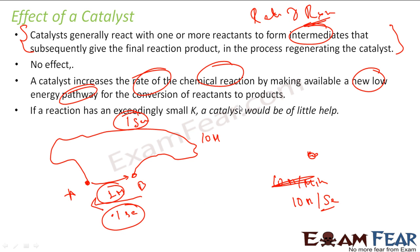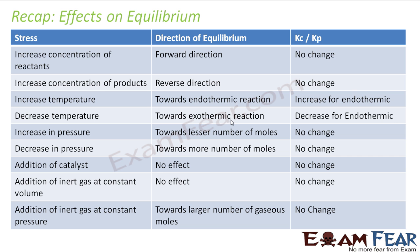Note that if K is very small, even if we add a lot of catalyst, it won't increase the reaction that much — K should have some value for the catalyst to help. Let's do a recap. The different kinds of stress we discussed: increase the reactant concentration, increase the product concentration, increase temperature, decrease temperature, increase pressure, decrease pressure, add catalyst, add inert gas at constant volume, add inert gas at constant pressure.